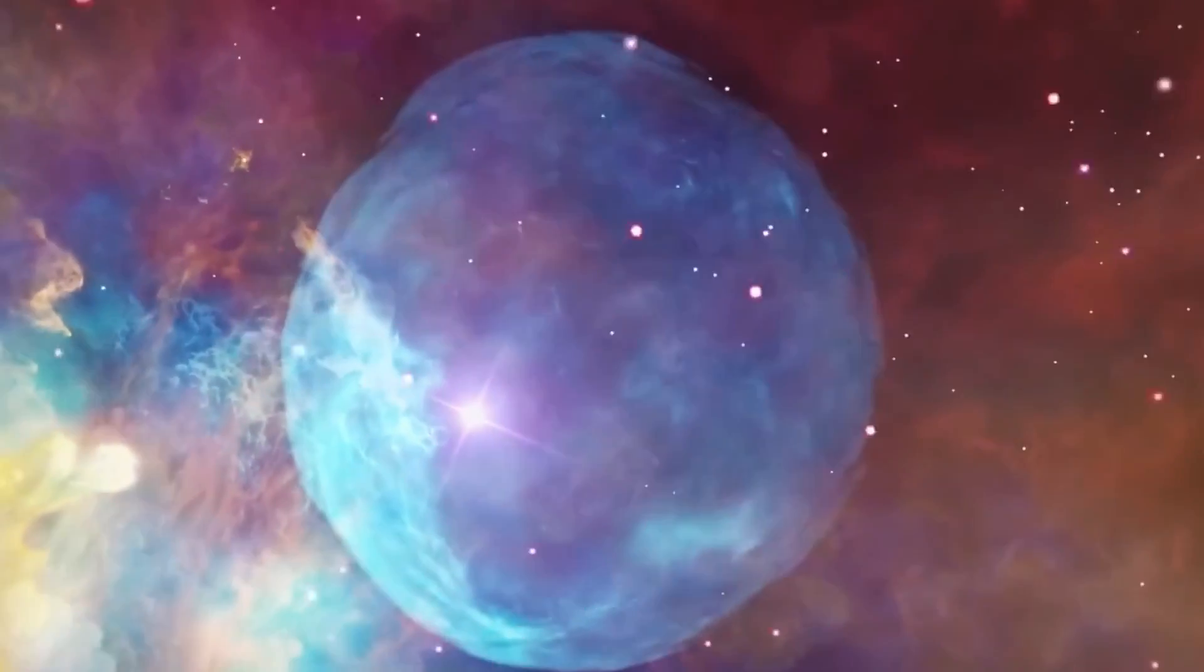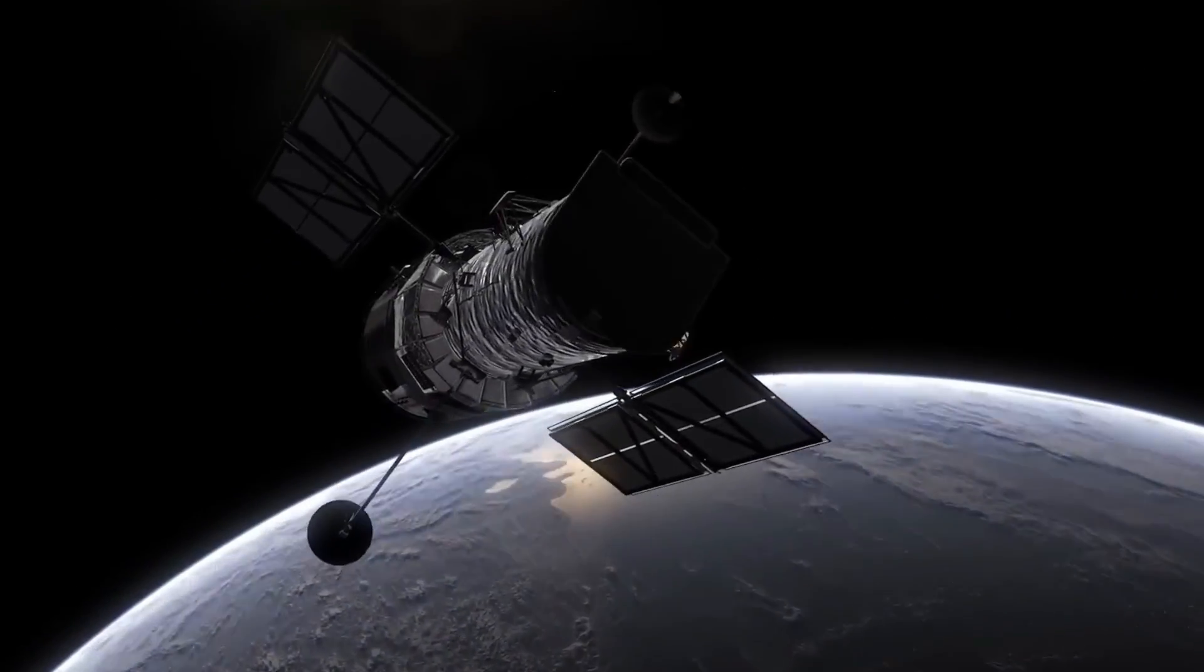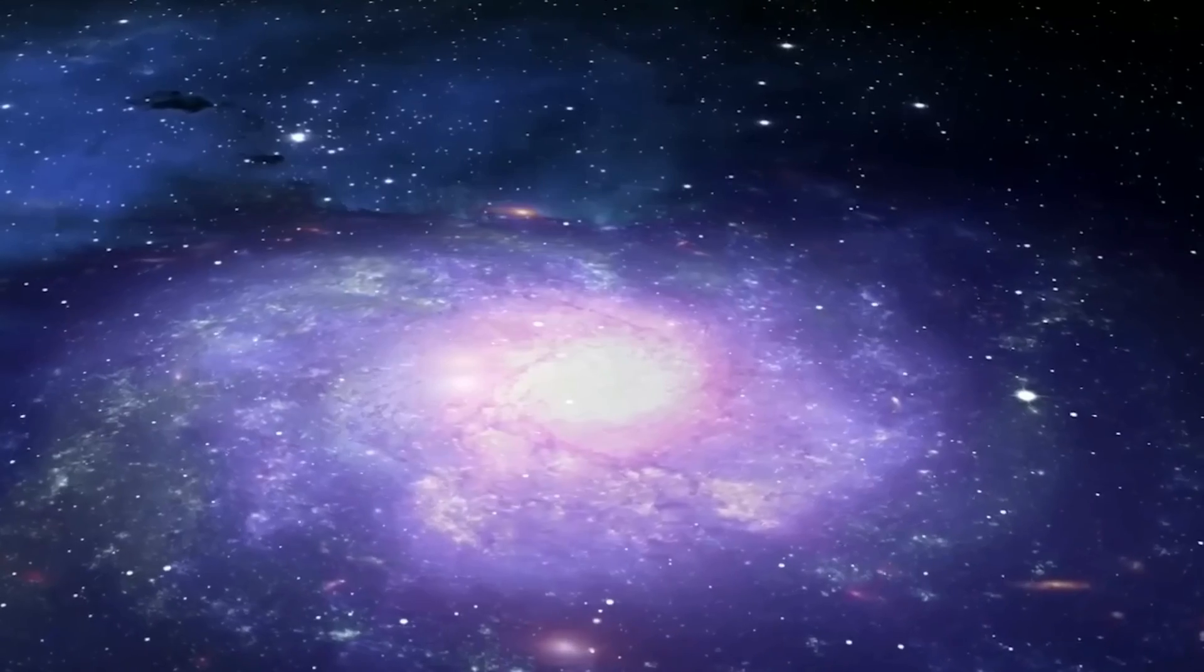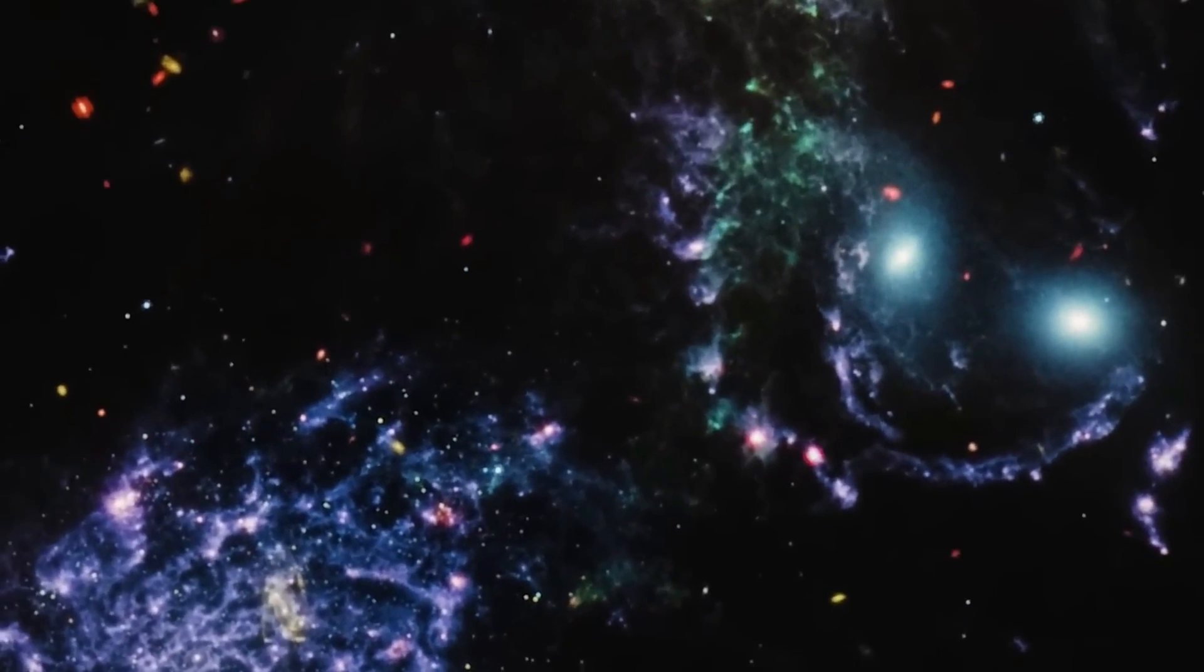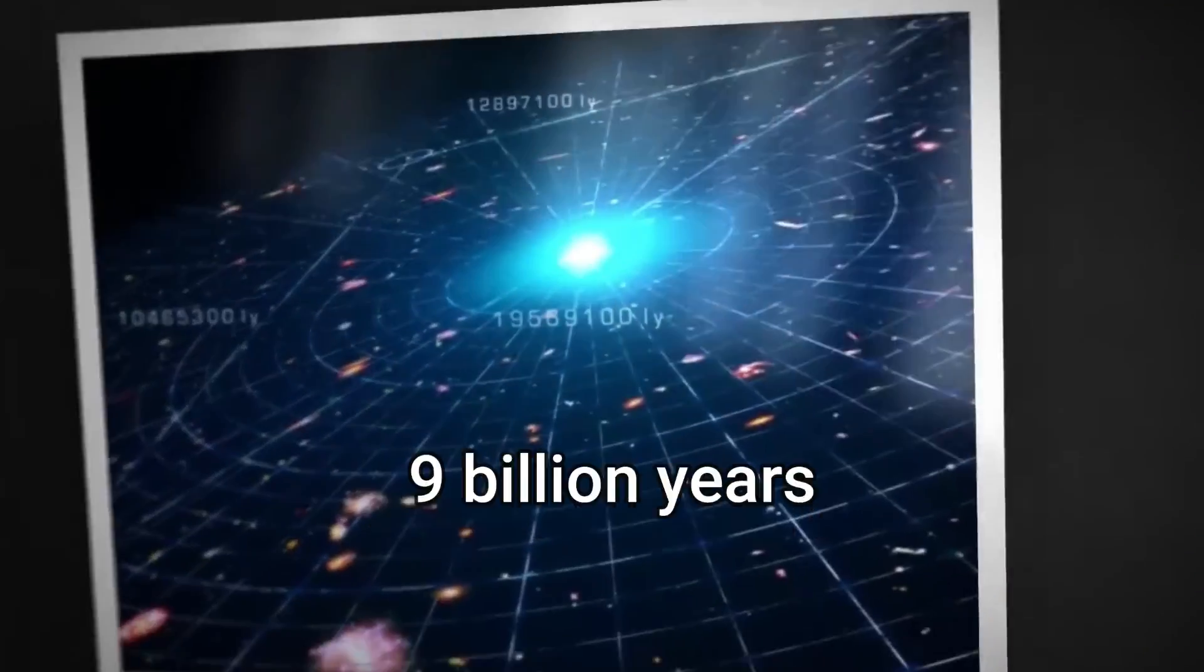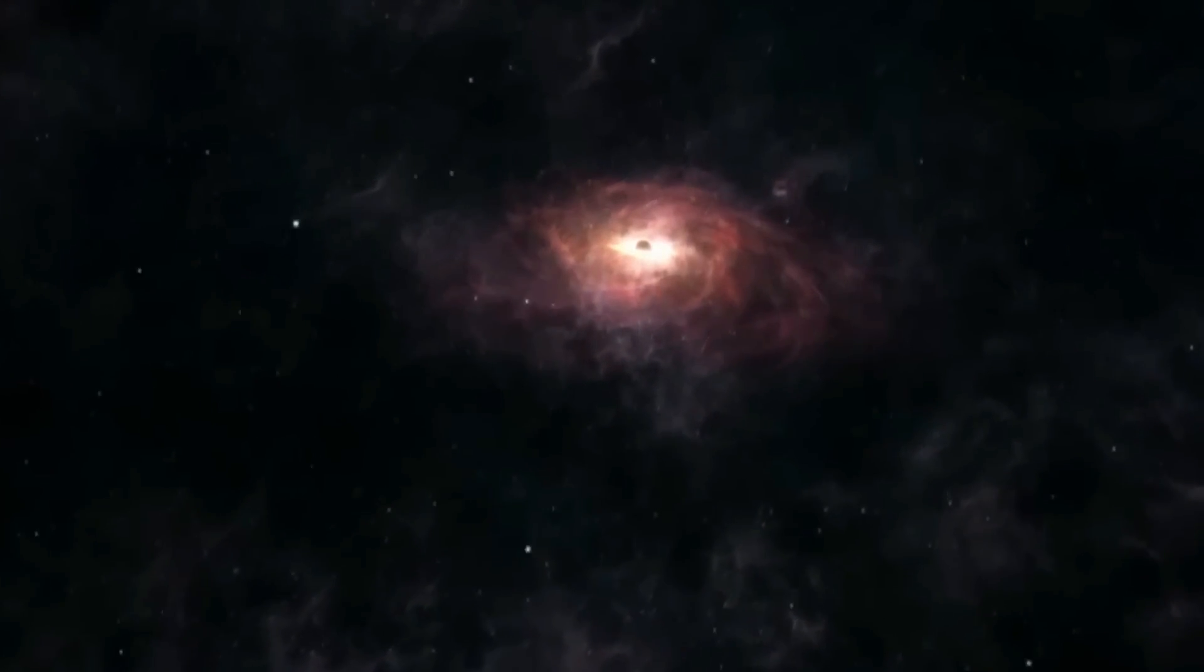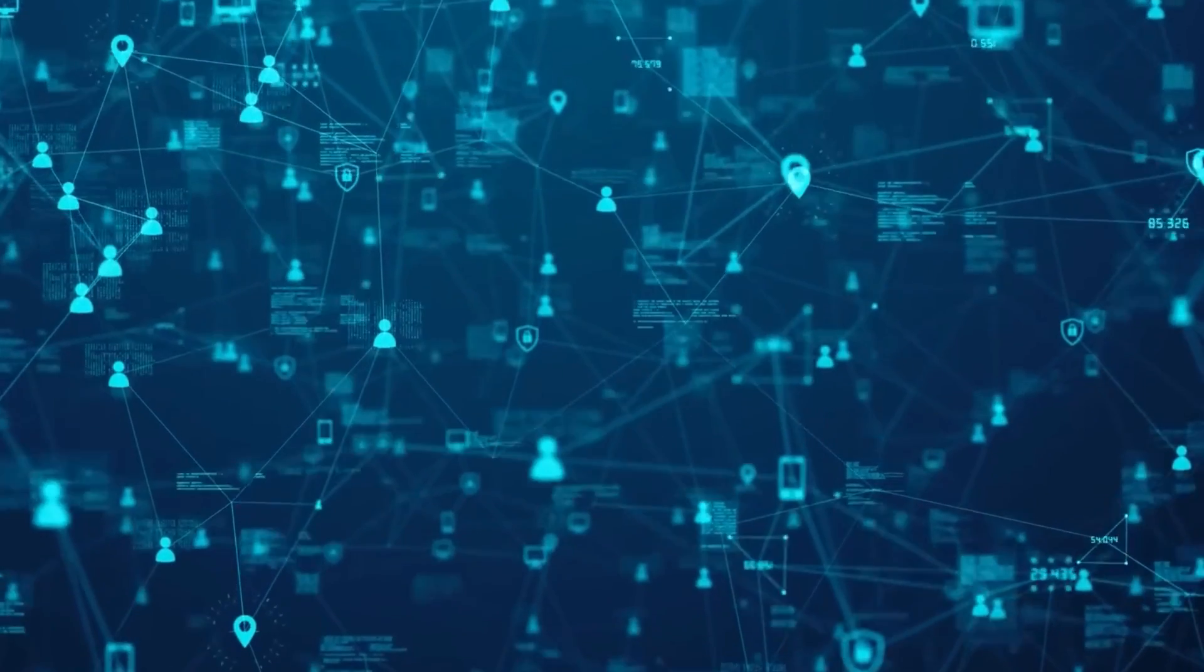Following this event, darkness enveloped the cosmos for 400 million years until gas clumps coalesced to form stars and galaxies, illuminating the universe. Our solar system emerged approximately 9 billion years after the Big Bang, during the cosmic dark ages.